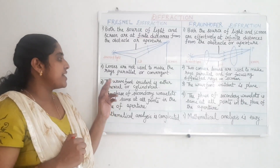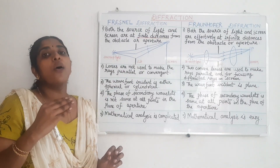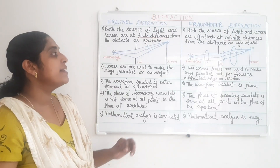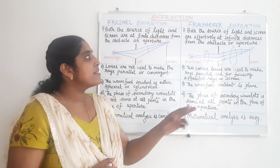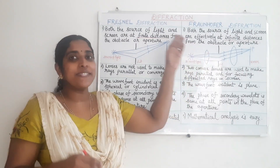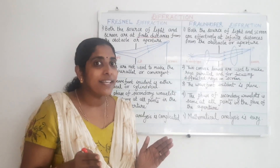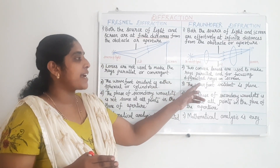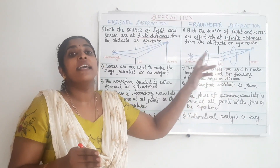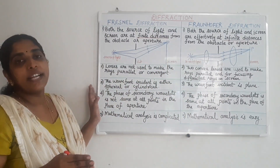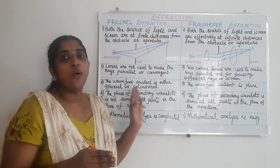In Fresnel diffraction, the wavefront incident on the aperture is either cylindrical or spherical. But in Fraunhofer diffraction, the incident wavefront is plane, because in Fraunhofer diffraction the source is at infinity. So if the source is at infinity, the wavefront produced is a plane wavefront. In Fresnel diffraction, the wavefront is considered as spherical or cylindrical.